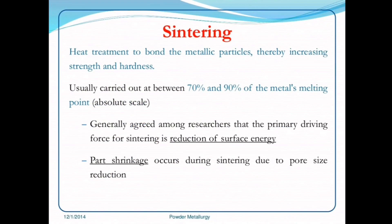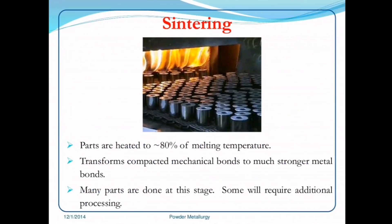Sintering is a heat treatment to bond the metallic particles, thereby increasing strength and hardness. It is usually carried out at between 70% and 90% of the metal's melting point. It is generally agreed among researchers that the primary driving force for sintering is reduction of surface energy. Part shrinkage occurs during sintering due to pore size reduction. Parts are heated to 80% of melting temperature, which transforms compacted mechanical bonds to much stronger metallic bonds. Many parts are completed at this stage; some will require additional processing.